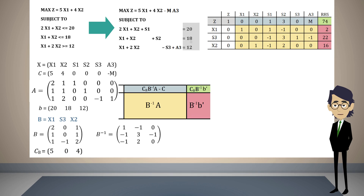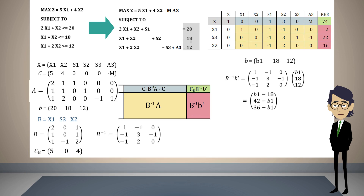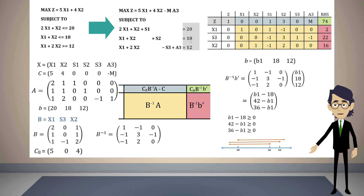To achieve this, our vector B is the vector [20, 18, 12] and now we change it to the vector [B1, 18, 12]. We multiply B-inverse times B-prime. This result shows the values that appear on the right-hand side of the table. All of these values must be greater than or equal to zero, and hence we get the following inequalities. When we plot the graph with the solutions of the inequalities, we observe that the three inequalities are satisfied if the value of B1 is between 18 and 36. This is the range in which B1 can oscillate.